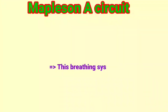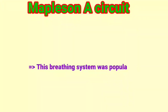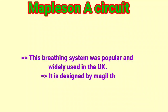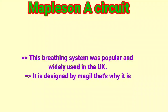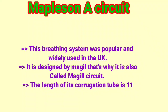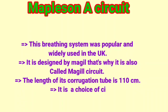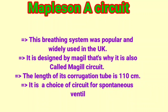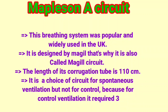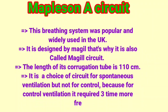Mapleson A circuit. This breathing system was popular and widely used in the UK. It is designed by Magill, that's why it is also called the Magill circuit. The length of its corrugated tube is 110 cm. It is the circuit of choice for spontaneous ventilation but not for controlled ventilation, because controlled ventilation requires three times more fresh gas.